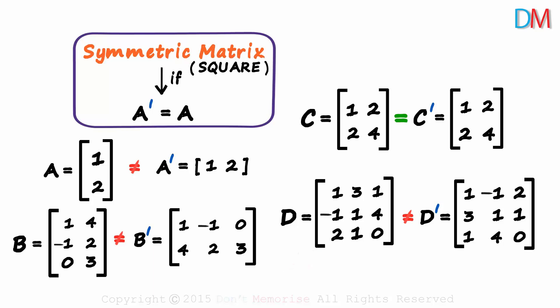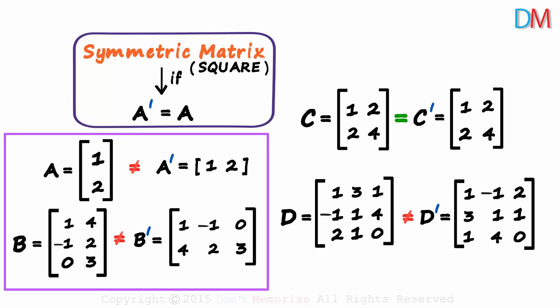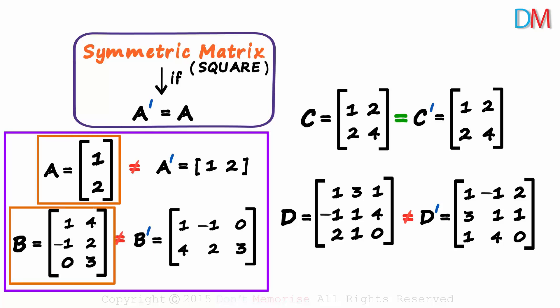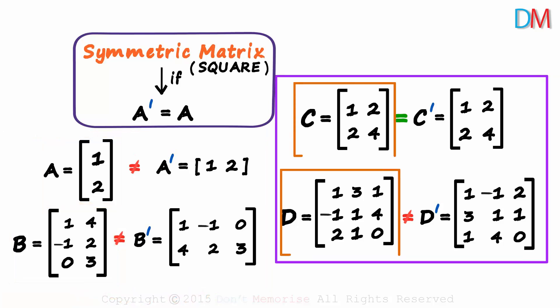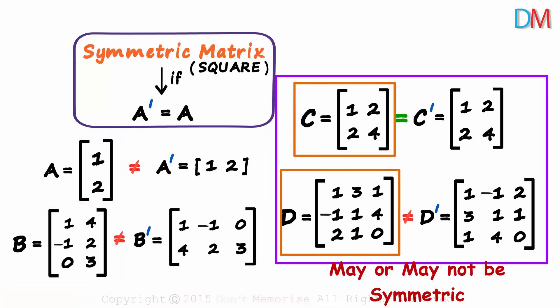But for a matrix to be symmetric, it has to be a square. Like in the first two examples, the matrices were not square, so they will surely be non-symmetric. But if they are square, then they may or may not be symmetric.